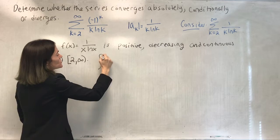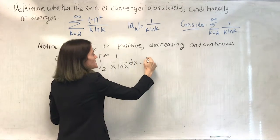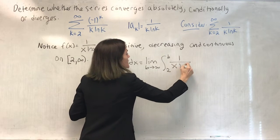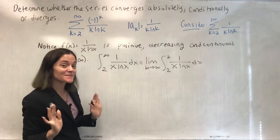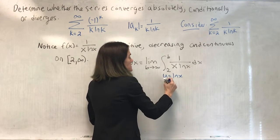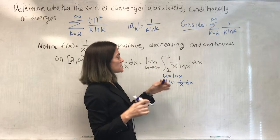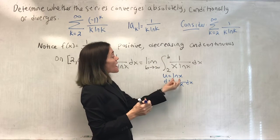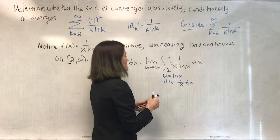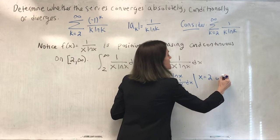Moreover, we have the integral from 2 to ∞ of 1/(x·ln x) dx. This is a limit as b goes to infinity of the integral from 2 to b of 1/(x·ln x) dx. This is a substitution where u = ln x, du = 1/x dx. Seeing this in my series is what really made me think of the integral test — I saw ln x and its derivative in the function. I could change my bounds: when x = 2, u = ln 2, and when x = b, u = ln b.